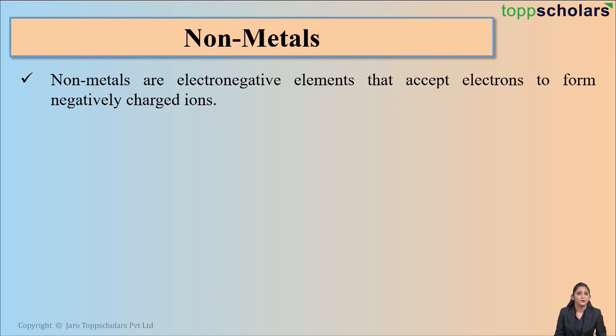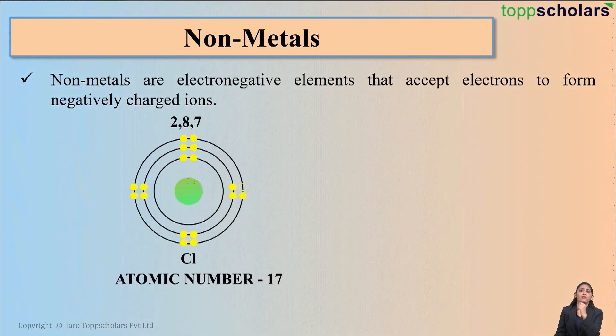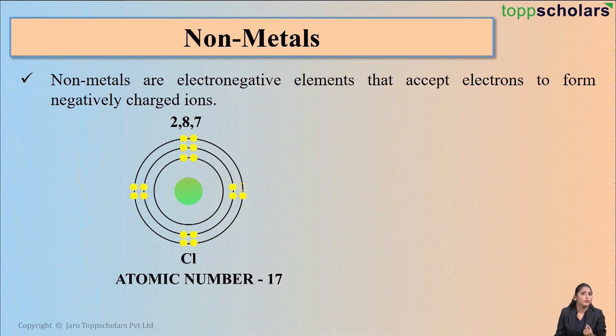Let's take an example to understand this. For example, we have chlorine. What's the atomic number of chlorine? 17, exactly. So, its electronic configuration is 2, 8, 7. That means chlorine has 7 electrons in its valence shell.